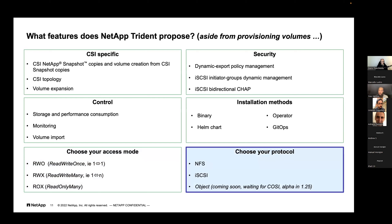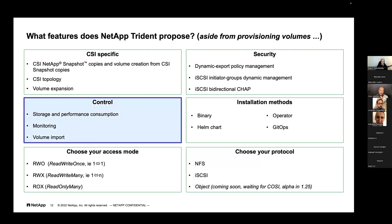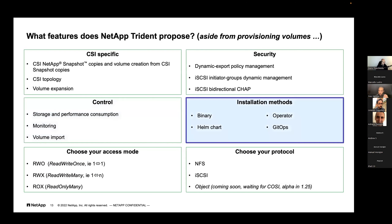Protocols supported are NFS and iSCSI, and we may support object storage soon with the COSI standard — Container Object Storage Interface — currently in alpha, aimed at dynamically creating S3 buckets. We can create quotas and limits for storage, control performance so one pod doesn't consume all storage IOs, provide monitoring, and import volumes back into Kubernetes. Installation via Helm charts, operators, or GitOps — whatever you prefer.